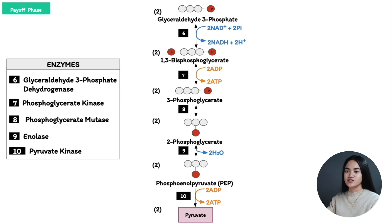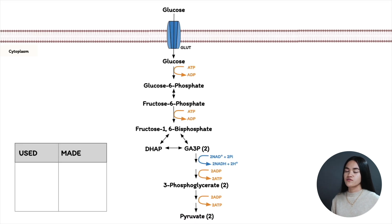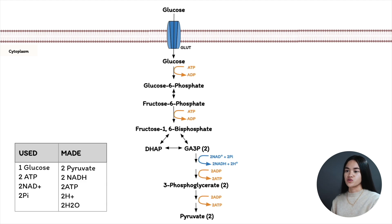That's the payoff phase, where we capture energy in the form of NADH and ATP. Summarizing the entire pathway: we started with one glucose molecule and invested 2 ATP in the preparatory phase, also using 2 NAD+. We produced 2 pyruvate molecules, 2 NADH, and technically 4 ATP — but because we invested 2 ATP in the preparatory phase, the net ATP yield per one glucose molecule is 2 net ATP.